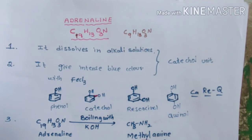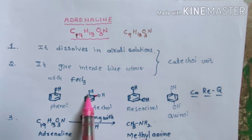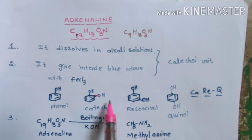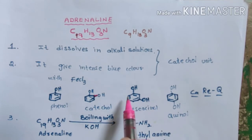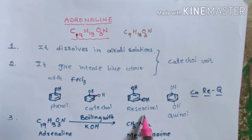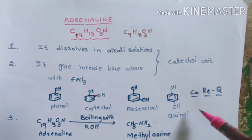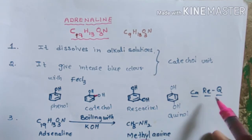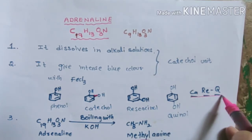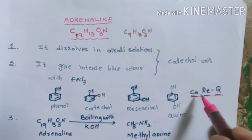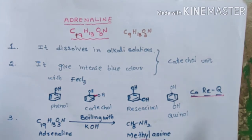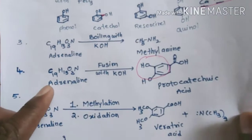Phenols with two hydroxy groups are named as follows: if two hydroxy groups are present ortho to each other, we call it catechol; if they are meta to each other, we call it resorcinol; and if they are para to each other, we call it quinol. This order can be remembered with the mnemonic: catechol, resorcinol, quinol.